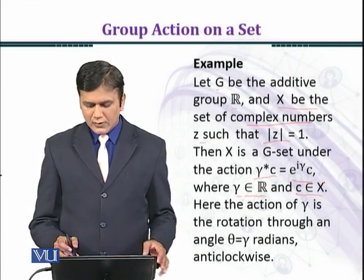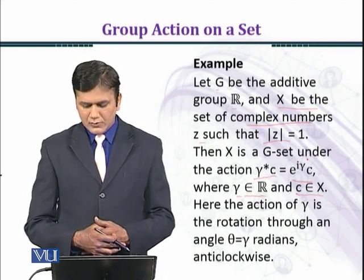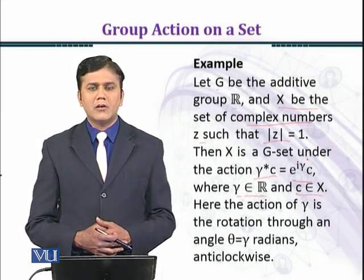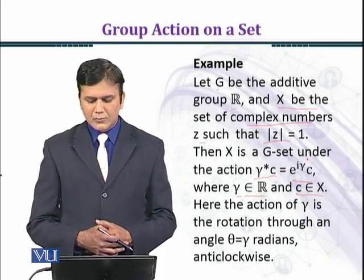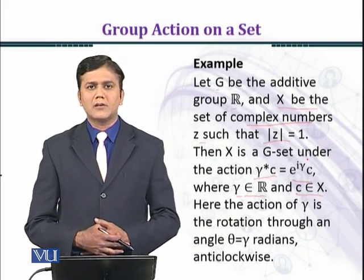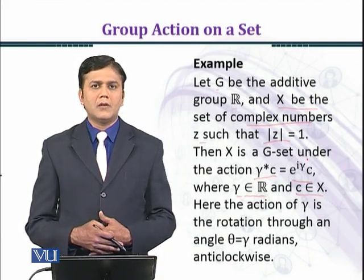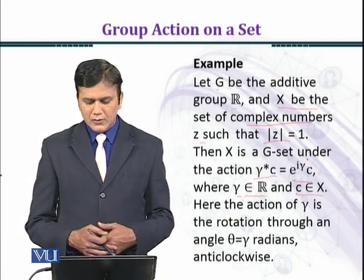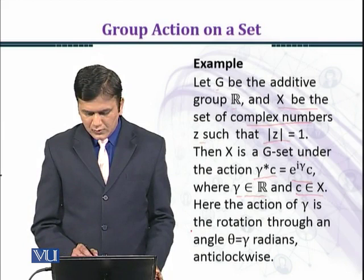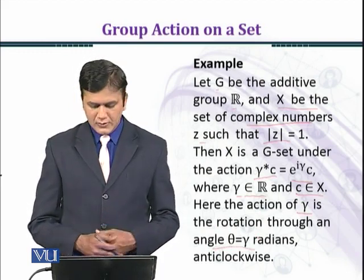آپ دیکھ سکتے ہیں کہ اگر آپ γ کو zero choose کریں تو پہلی condition e★x = x satisfy ہو جائے گی، کیونکہ e^(i·0) = 1 اور 1·c = c مل جائے گا۔ اسی طرح اگر آپ γ کی دو values γ1 اور γ2 لے لیں اور انہیں add کریں، تو e^(iγ1 + iγ2) آ جائے گا اور second axiom بھی easily satisfy ہو جائے گا۔ Here the action of γ is the rotation through an angle θ = γ radians anti-clockwise.